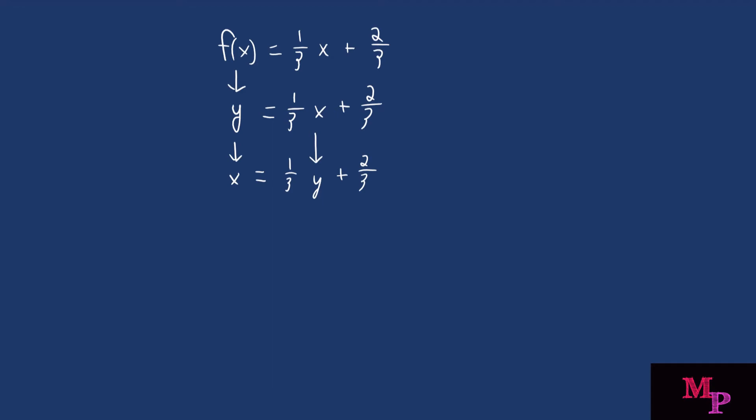So because you're adding two-thirds to the right side, you want to do the inverse of that to both sides. So go ahead and subtract two-thirds.